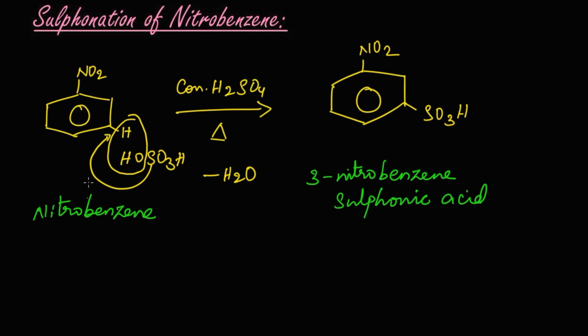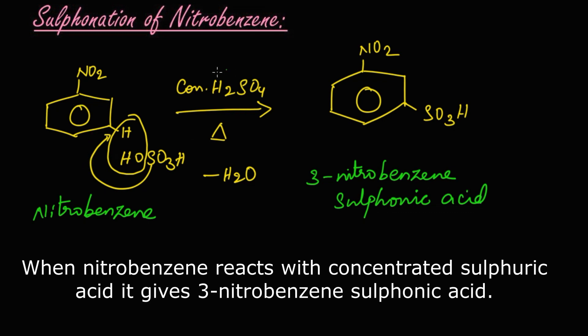Let's summarize the reaction now. When nitrobenzene undergoes sulfonation reaction in presence of concentrated sulfuric acid by heating, it gives 3-nitrobenzene sulfonic acid as the product. Thank you.